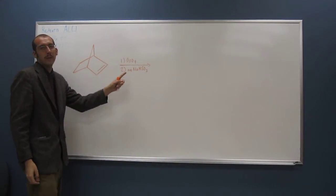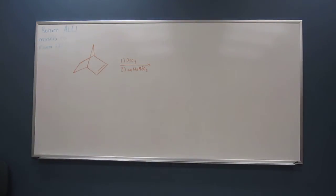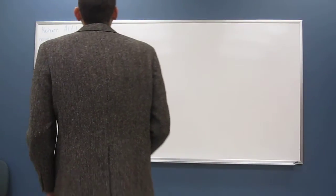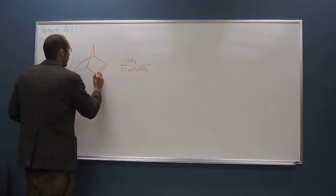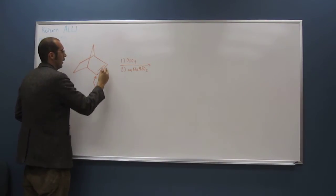Whenever you see osmium tetroxide, that thing's gonna make a diol out of the alkene. And in fact, whenever you have an alkene, just like the last problem we were talking about, you've got these carbons being sp2 centers, right?